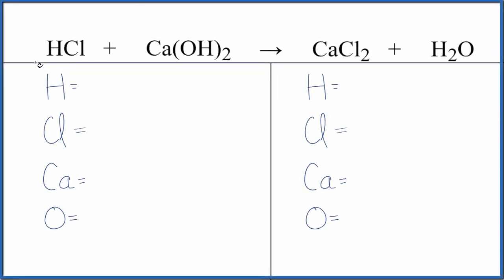Let's balance the equation for HCl plus Ca(OH)₂. This is hydrochloric acid, and this is calcium hydroxide. We'll also look at the type of reaction and write the states.